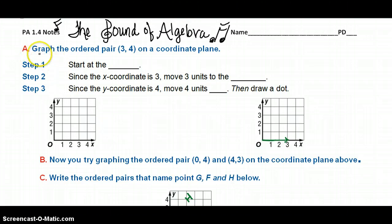The first example here says to graph the ordered pair 3-4. Now this should be review, but just in case you're a little bit rusty, we're going to start at the very beginning. Let's start at the very beginning. It's a very good place to start. The origin is the beginning. So if you would follow me on the graph below, the origin is here.